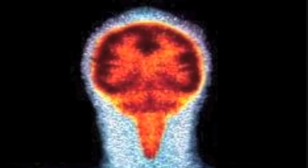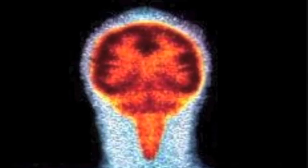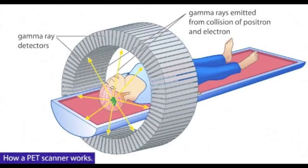For instance, the brain uses glucose as its main source of energy. Glucose will go to the parts of the brain which are most active. The radiopharmaceutical emits a type of radiation called positrons. Positrons are positively charged particles with the same mass as electrons — they are the antiparticles of electrons. The positrons collide with electrons in the body and produce gamma rays which travel out of the body. The level of radiation is similar to that of a normal x-ray.